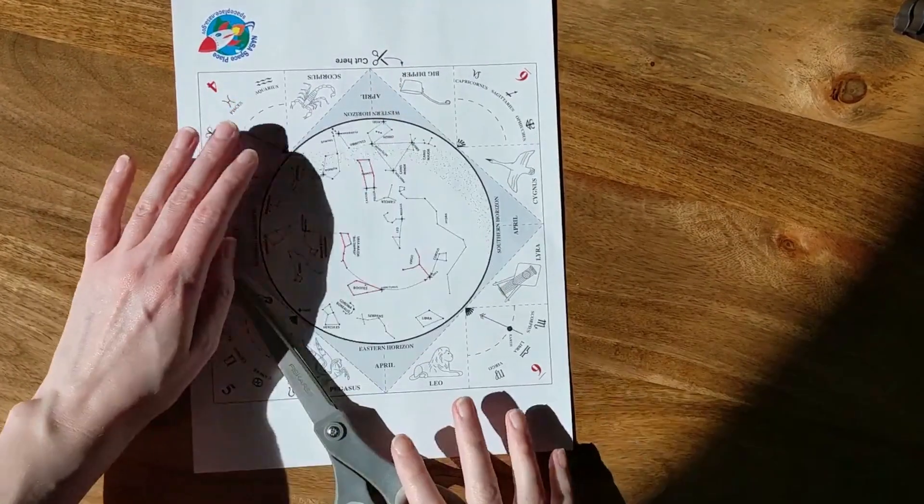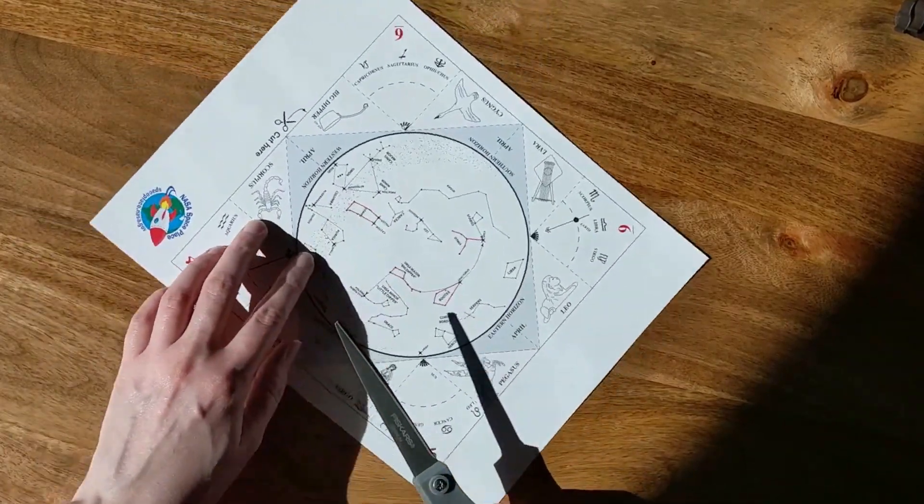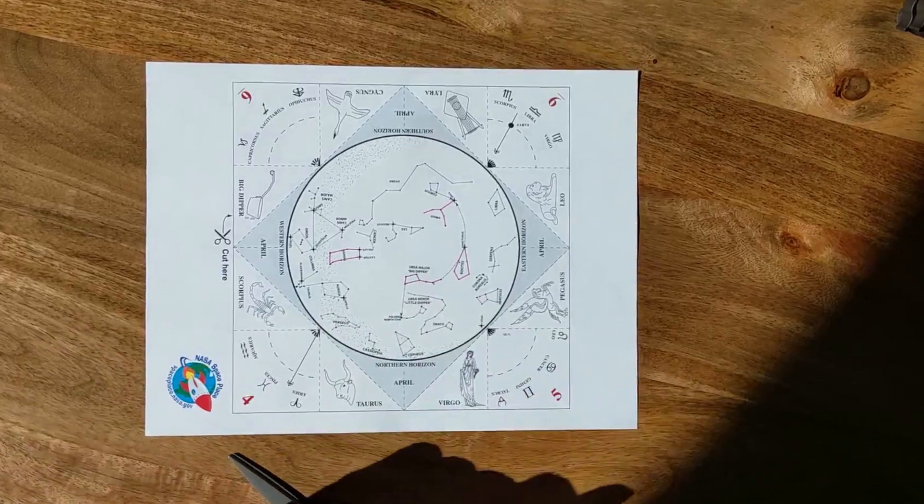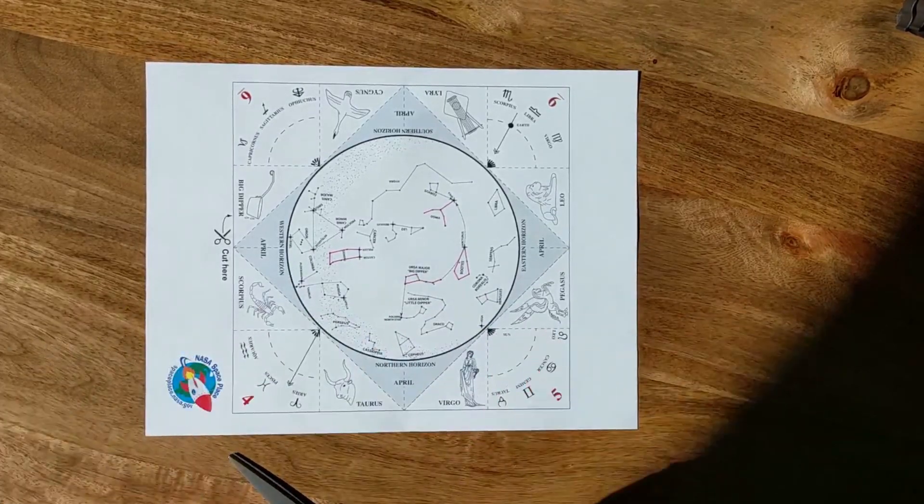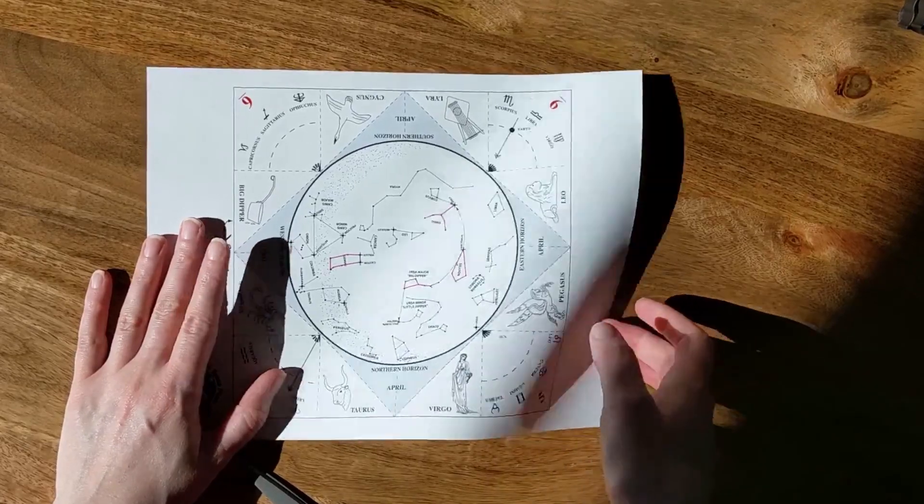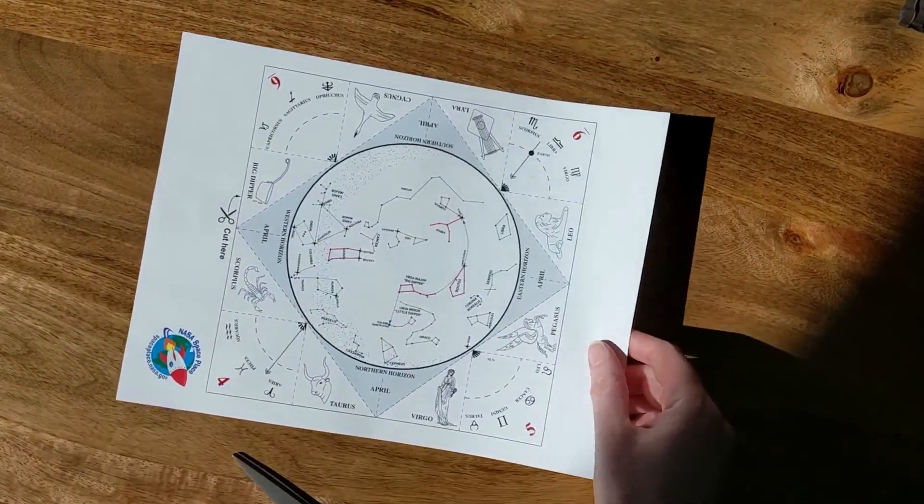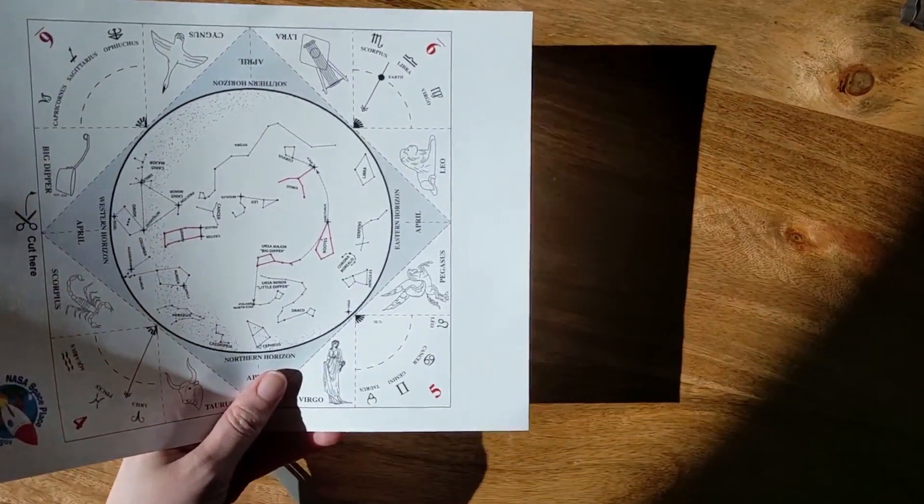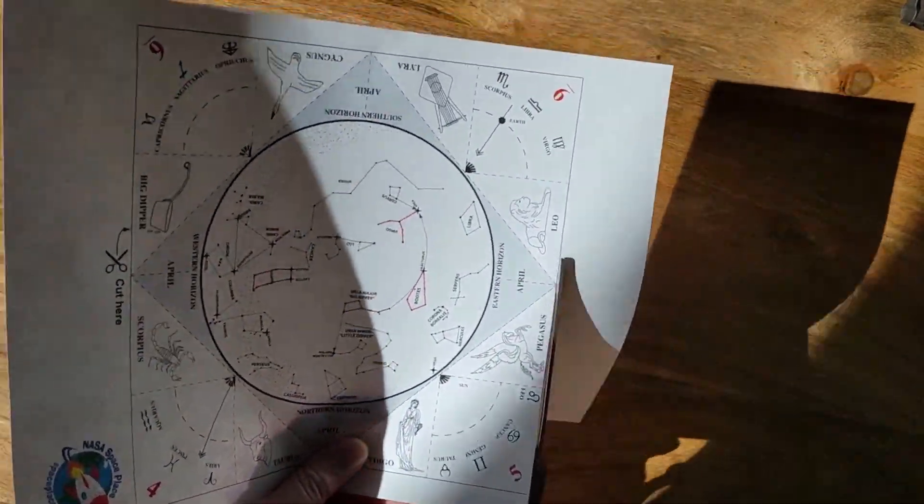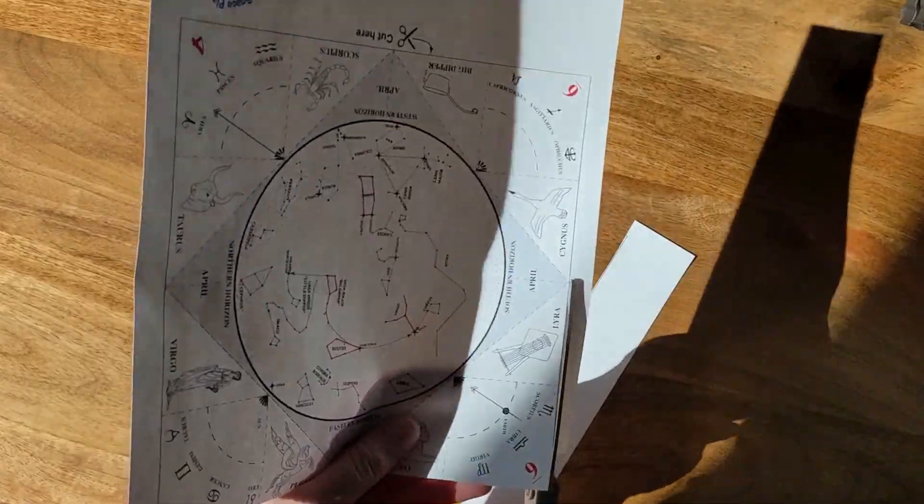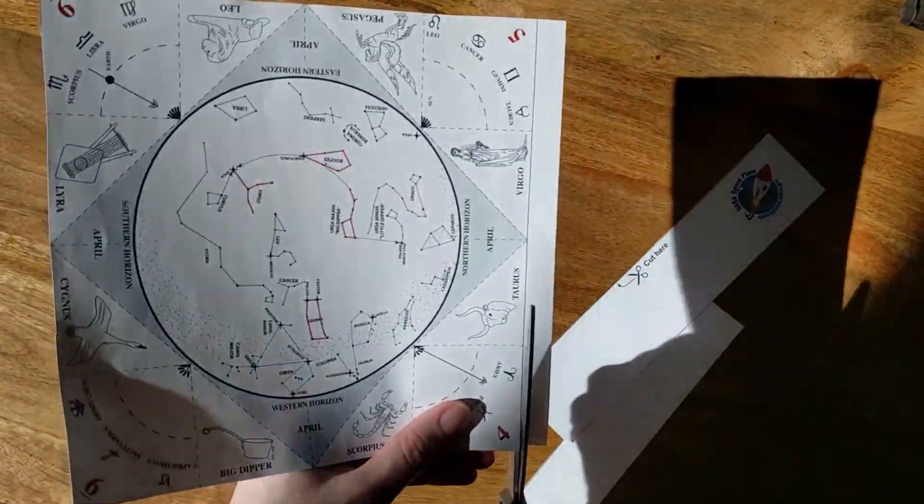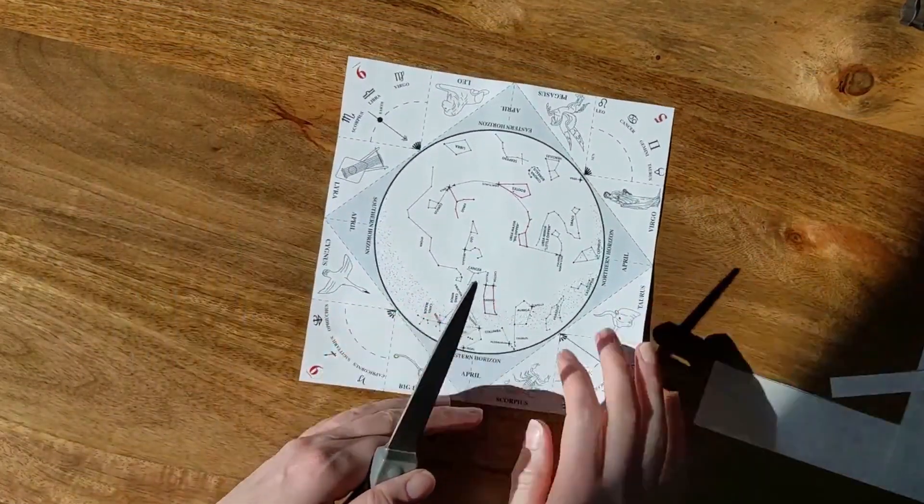So something else you can do related to constellations is we can make a fortune teller kind of constellation viewer sort of thing. So check the link below for the printout. I have printed out April, because that's the month we're in. And we're just going to cut around the outside.